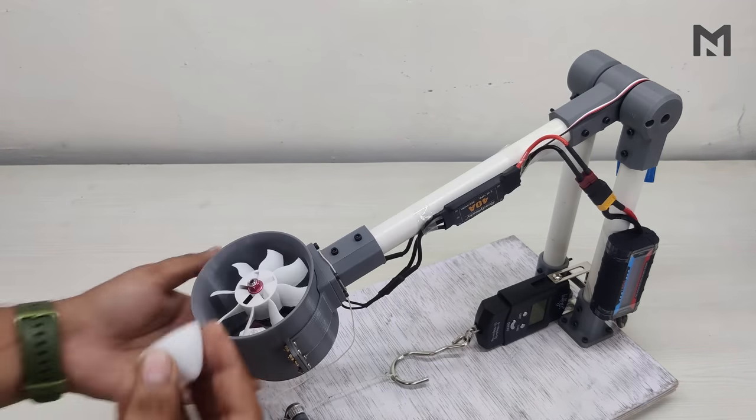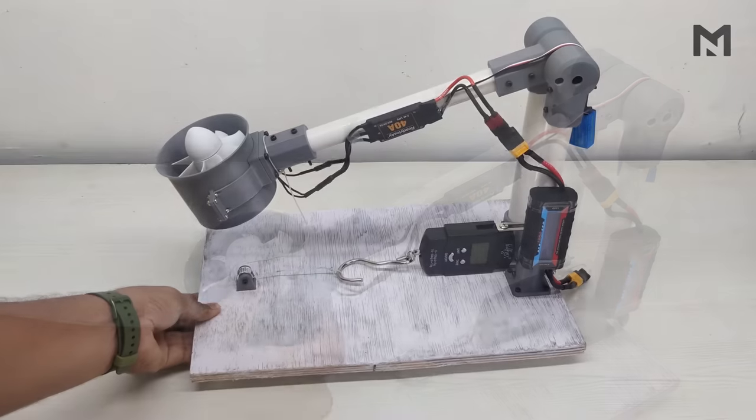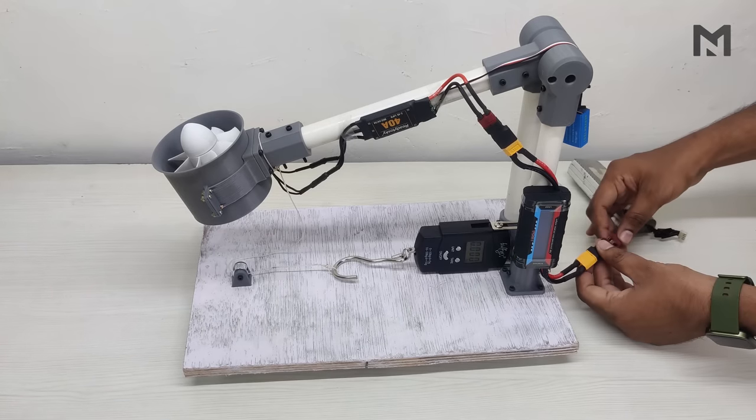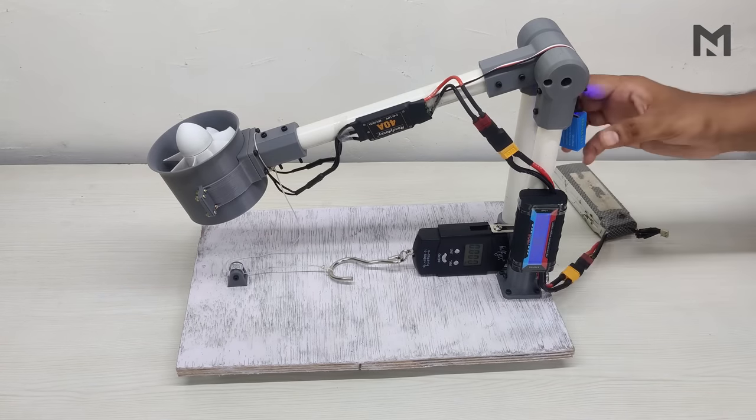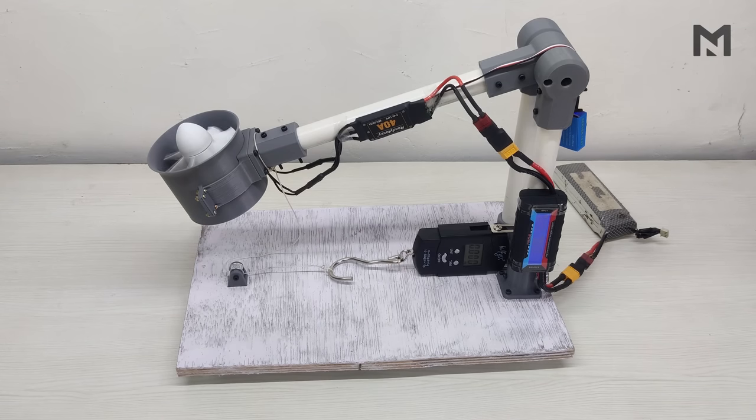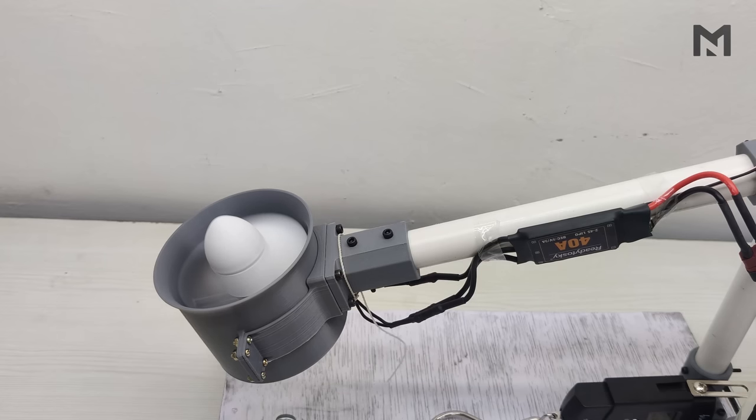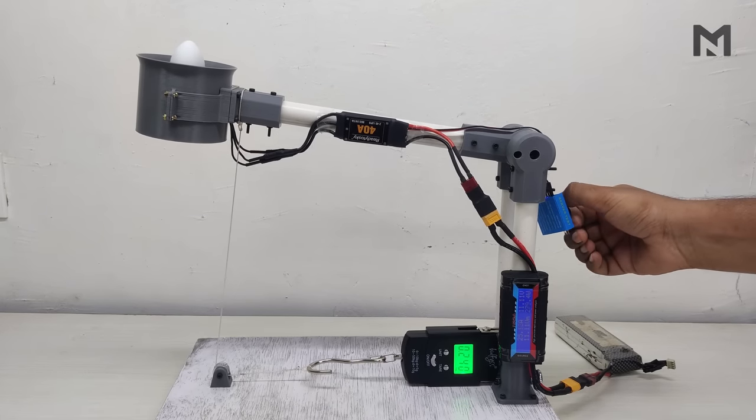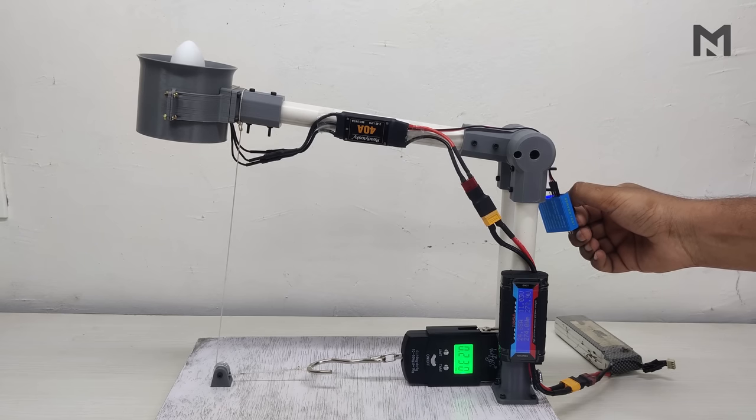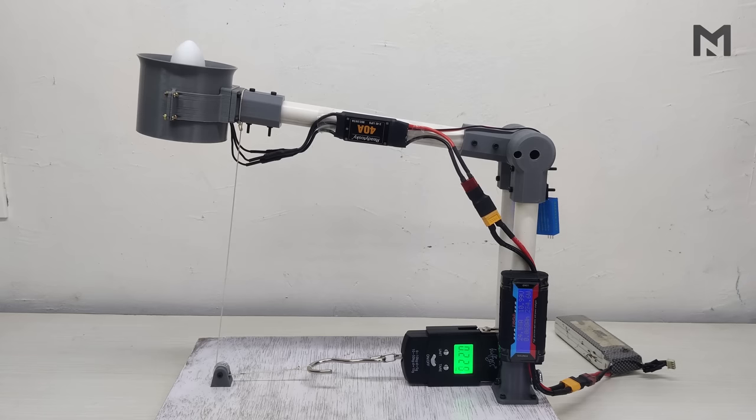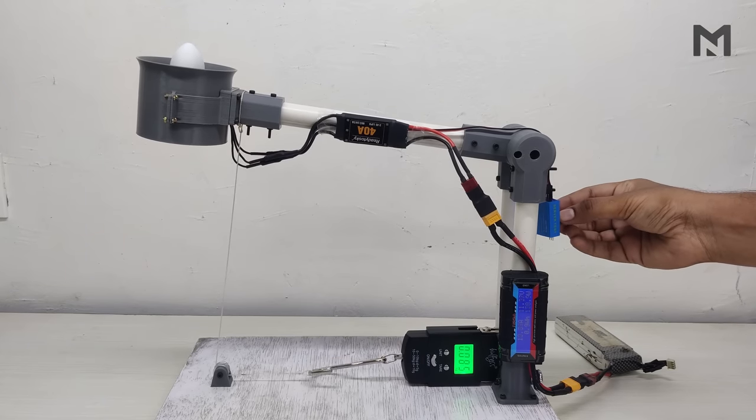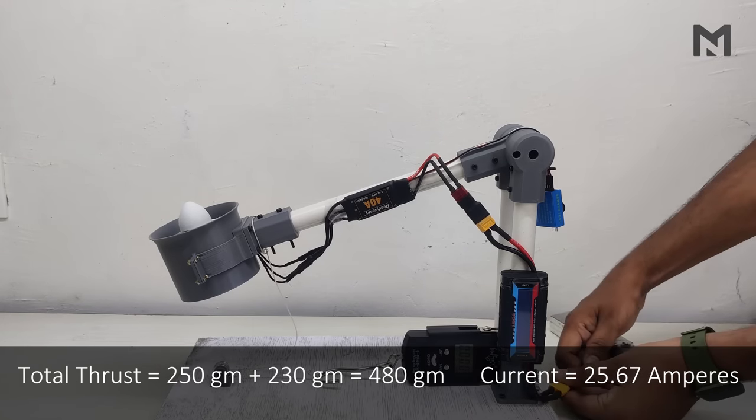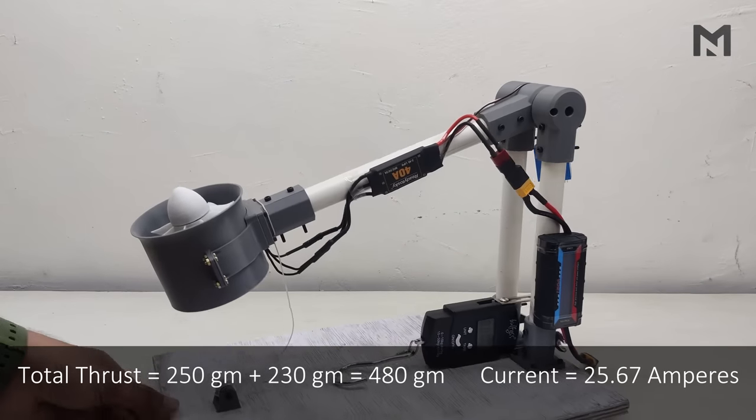Now we will begin the thrust test of this eight-bladed propeller. Switch on the spring balance and connect the battery. The maximum thrust we got was 250 grams at 25.67 amperes. Adding the ideal weight, we get a total thrust of 480 grams at 25.67 amperes. Now I am going to replace this propeller with a 12-bladed one.